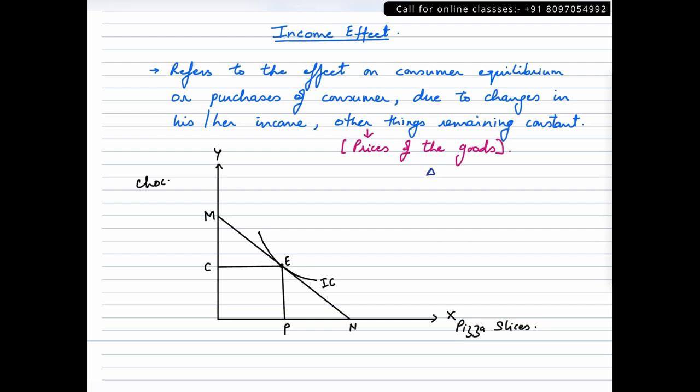So whenever the consumer's income changes, how would that lead to a change in consumer's equilibrium? That is what we are going to study under income effect. Now, all those students who do not understand the concepts of equilibrium or budget line, you need to have a look at those videos first, because this is more or less a build-up on that. If you don't know those concepts, this lecture is not going to make any sense to you.